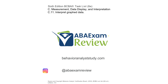Welcome back to ABA exam review and the continuation of our 6th edition BCBA task list series. Today we're continuing measurement, data display, and interpretation with interpret graph data. With C11, we're going to cover the very basics of visual analysis, including trend, variability, and level. These are the things you're going to start looking for as you analyze data through graphs using visual analysis. It's one of the big advantages of how we interpret data in ABA - visual analysis is quick, easy to perform, and easy to explain for stakeholders.